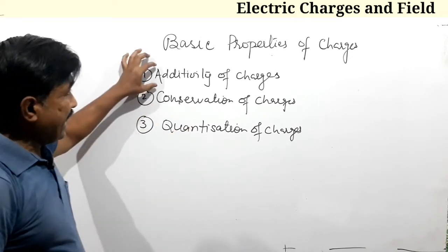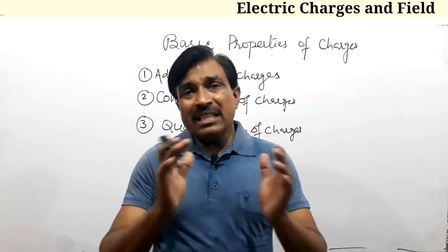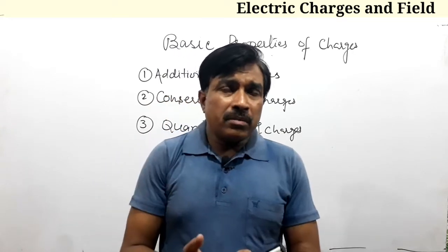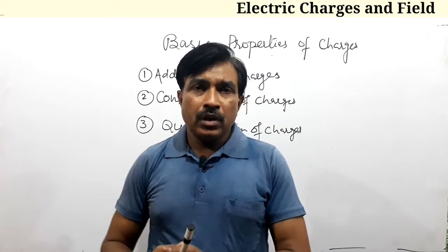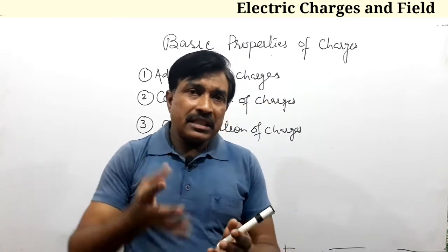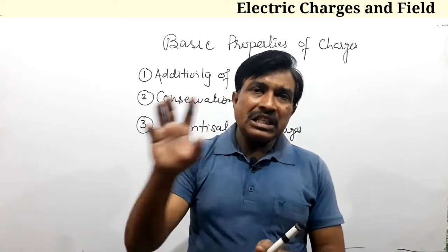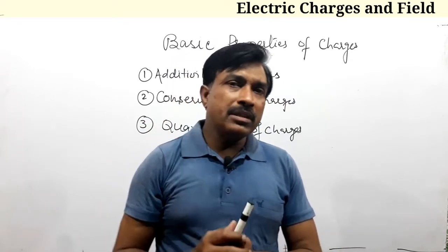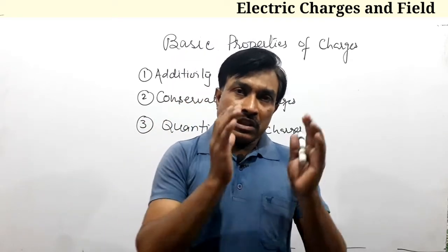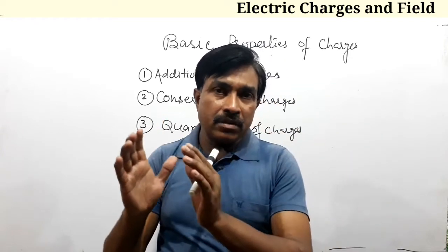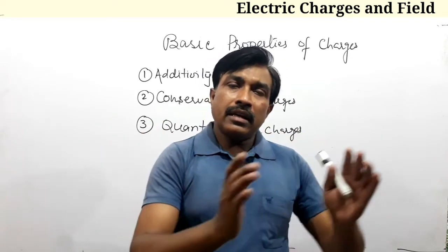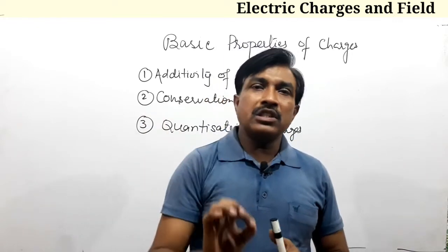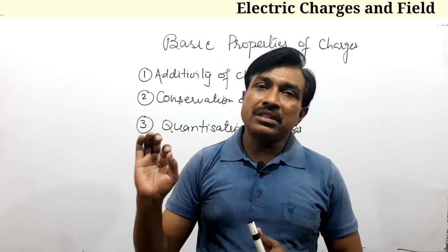First of all, additivity of charges. Additivity of charges means if there is a system that has many charges, the total charge is the algebraic sum — meaning charges with positive sign and charges with negative sign are added together. This property is known as the additivity of charges.